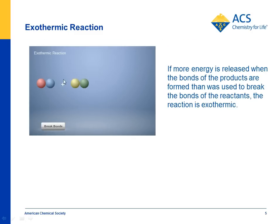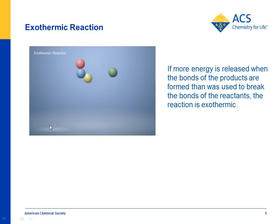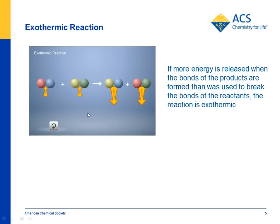For an exothermic reaction — like the baking soda solution and calcium chloride — it also takes some energy to break the bonds of the reactants. When the atoms rearrange and rebond to form the products, some energy is released. In an exothermic reaction, more energy is released when the bonds in the products form than was used to break the bonds of the reactants, so overall this is an exothermic reaction.